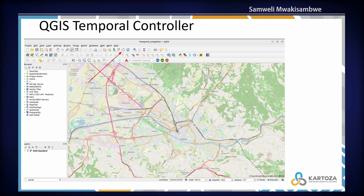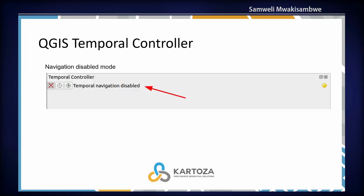The main part of the Temporal Controller was finished around May 2020, and the first QGIS version that had the Temporal Controller was QGIS 3.14. Now I'm going to talk about the Temporal Controller modes.